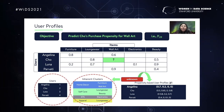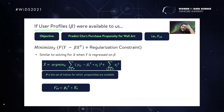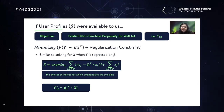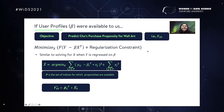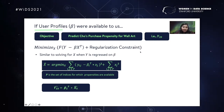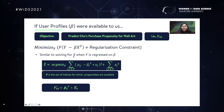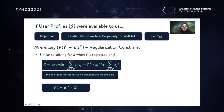So we have unknown user profiles and unknown item profiles. Let's assume for a moment that if user profiles beta were available to us, and we are trying to estimate Y_23, the problem reduces to a linear regression problem. This is the loss function, and you can have a regularization constraint attached to it with respect to X. Minimizing with respect to X, we are solving for X when Y is regressed on beta — giving us the estimate of X given beta and the observational Y's.